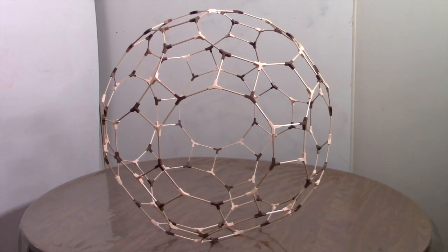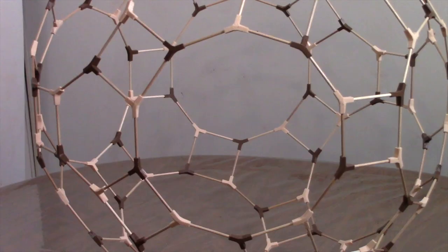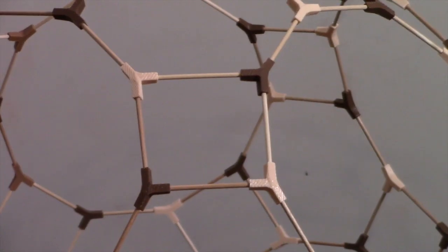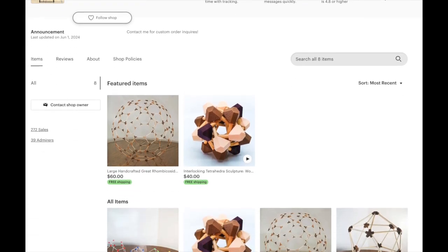One of the biggest lattice models that I've created was the great rhombicosidodecahedron. It has 180 struts, 120 vertices, and it has 12 decagon faces, 20 hexagon faces, and 30 square faces. So I sell these wonderful shapes on my online shop.